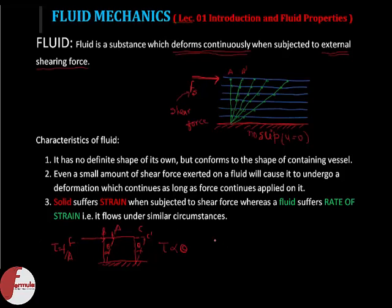In the case of fluid, tau — shear stress — is not proportional to shear strain; it is proportional to rate of strain. That is why fluids are different from solids: solids suffer strain, while fluid suffers rate of strain. We will explore this concept further in the next lecture along with the properties.